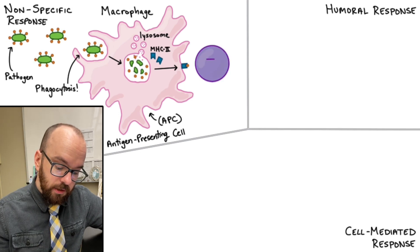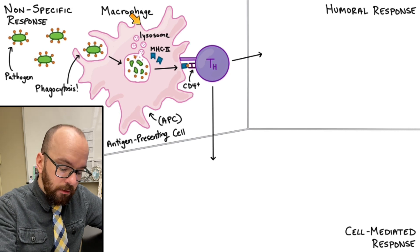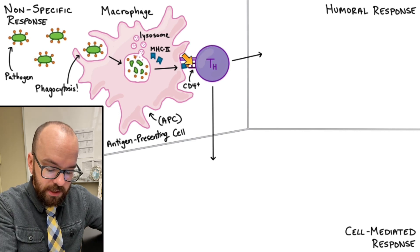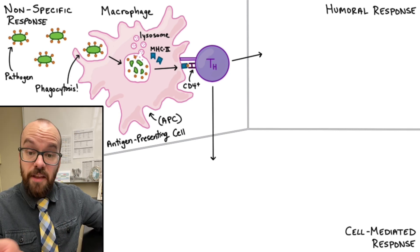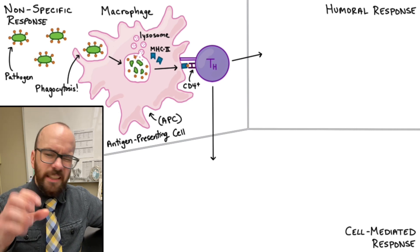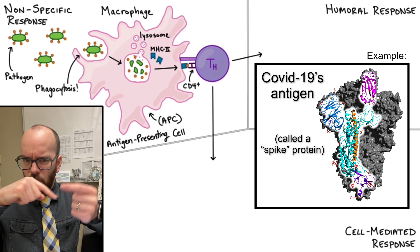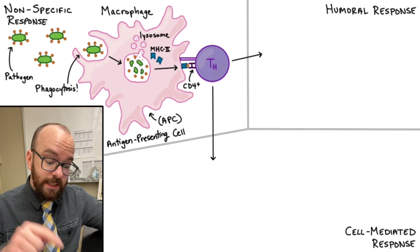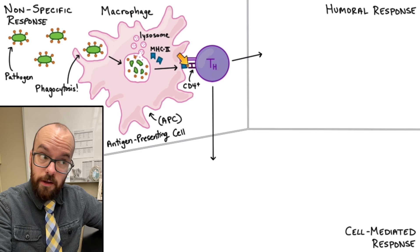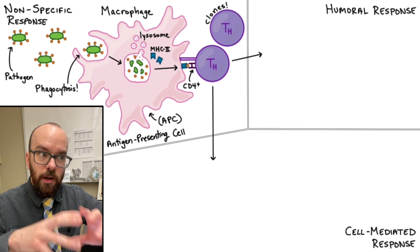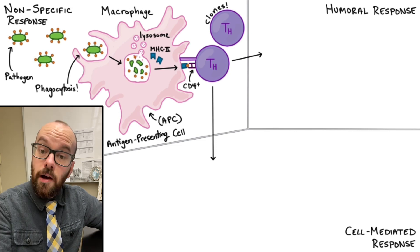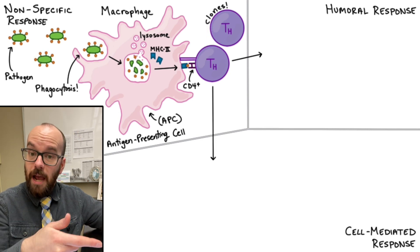Once the macrophage is presenting the antigen, another cell called a T helper cell comes along. Both the macrophage and T helper cell are white blood cells, just different types. The T helper cell uses its specialized protein CD4+ to recognize and learn what that antigen looks like — not just a circle, but a protein that folds many times into a complex, unique shape. Once the T helper cell knows the antigen's shape, it clones itself, making many copies so we have more cells ready to fight off that pathogen.